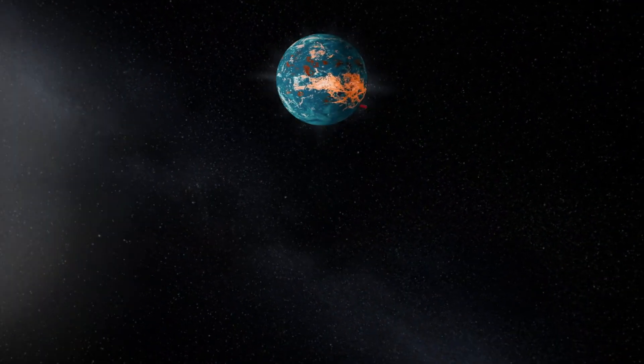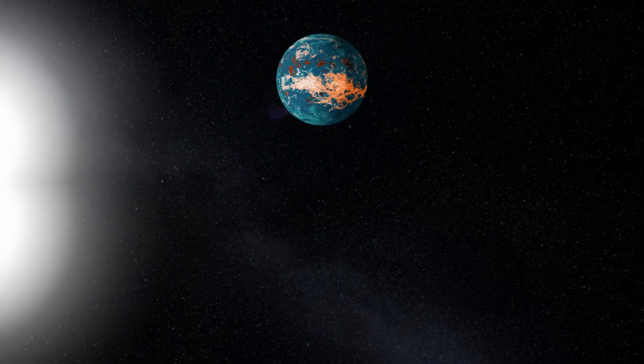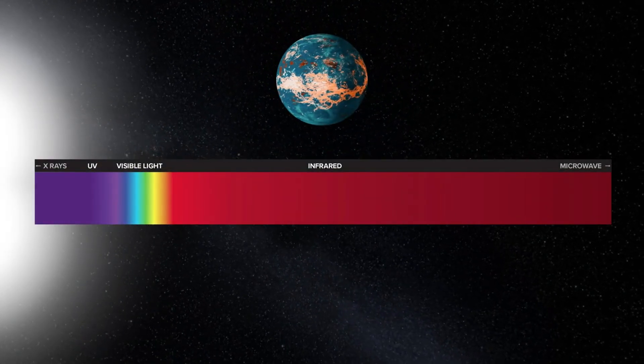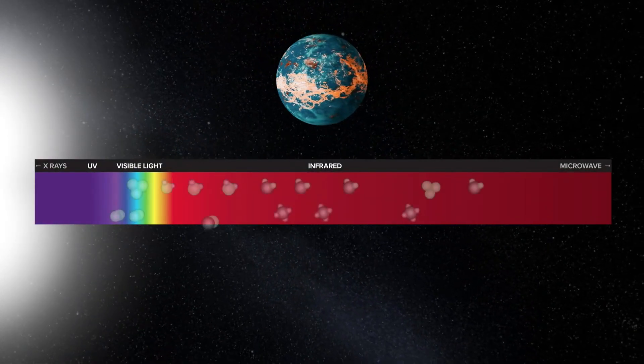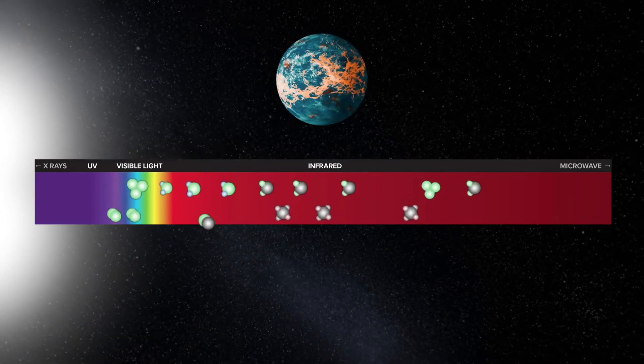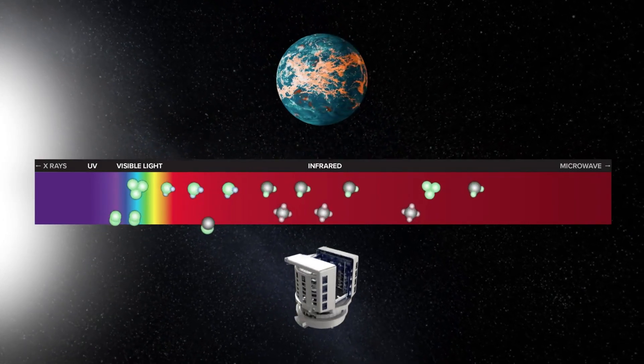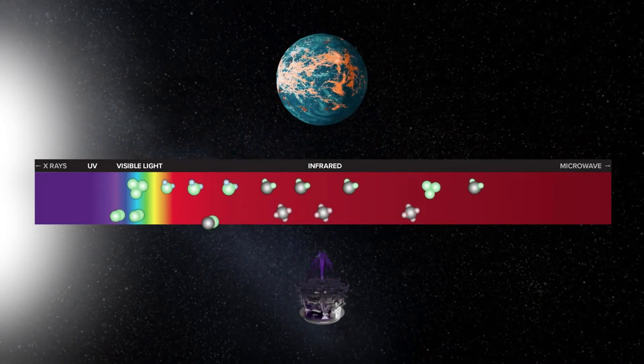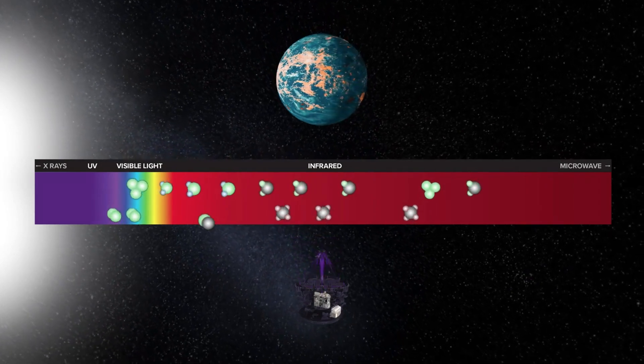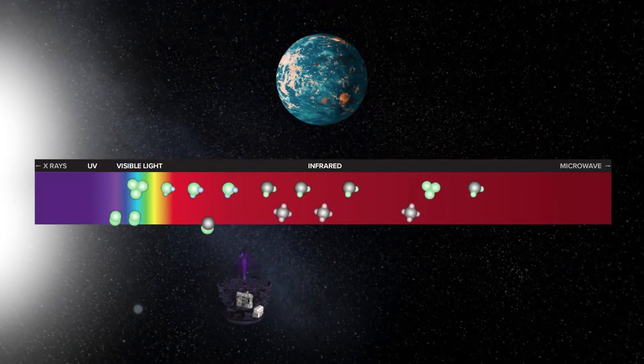To study those planets and all the other objects in the universe, we study the light from them. Light comes to us at a continuum of wavelengths all containing information. Detecting an Earth-like planet requires new technologies capable of measuring light in the visible and infrared part of the spectrum with extreme sensitivity.